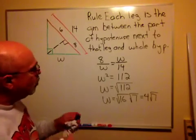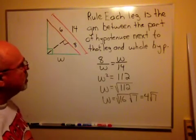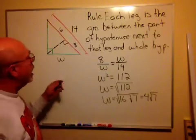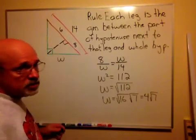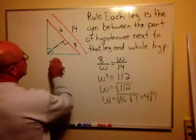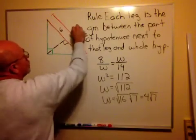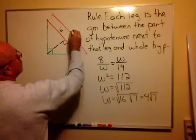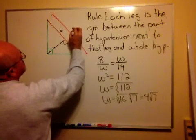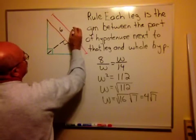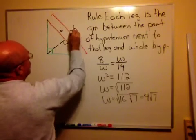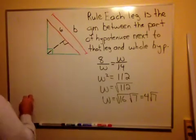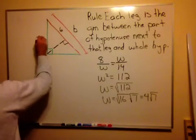Let's look at one more example with this rule, and then we'll be done with the geometric mean relationships in this right triangle. Let's put a variable out here. Let's call it B, and let's put a number here. Let's just make it 10.